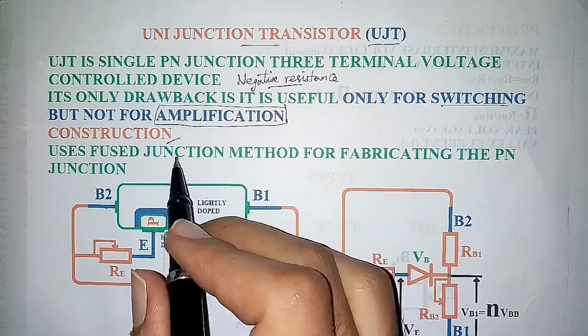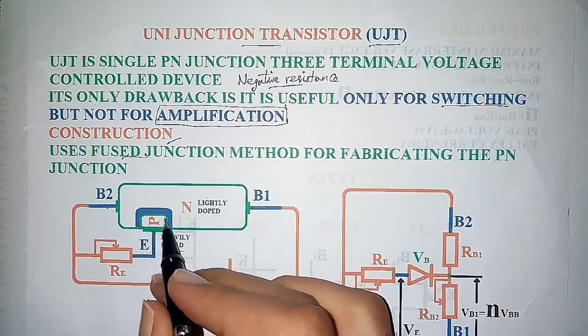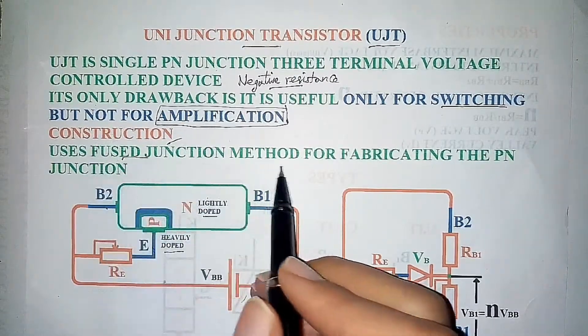Coming to its construction, UJT is constructed by fusing a heavily doped P-type semiconductor to a lightly doped N-type semiconductor using fused junction method.